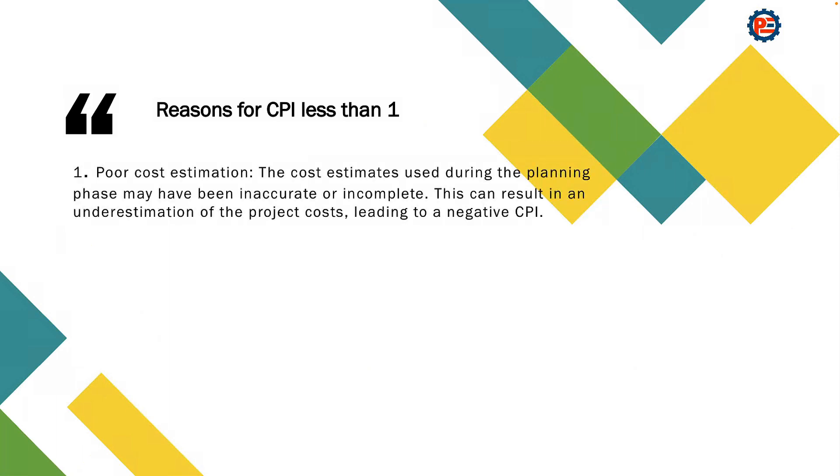Coming back to the question: reasons of CPI less than one. What could be the reasons? Reason number one is poor cost estimation. The cost estimation used during the planning phase may have been inaccurate or incomplete. This can result in an underestimation of the project cost, leading to a negative CPI.